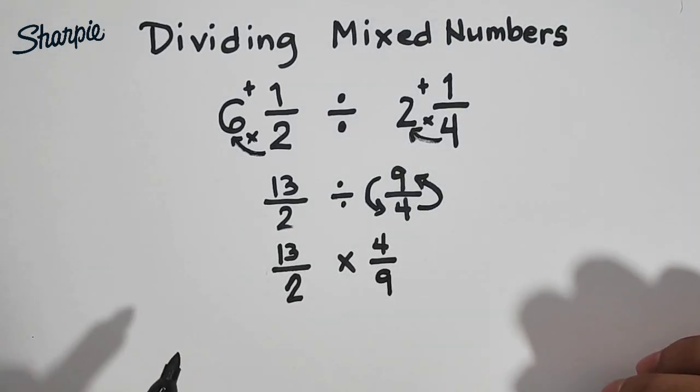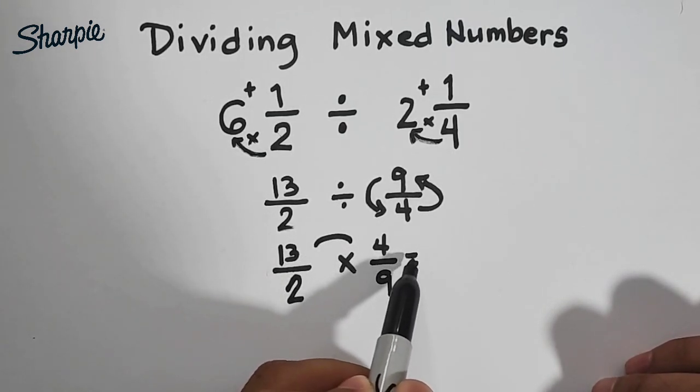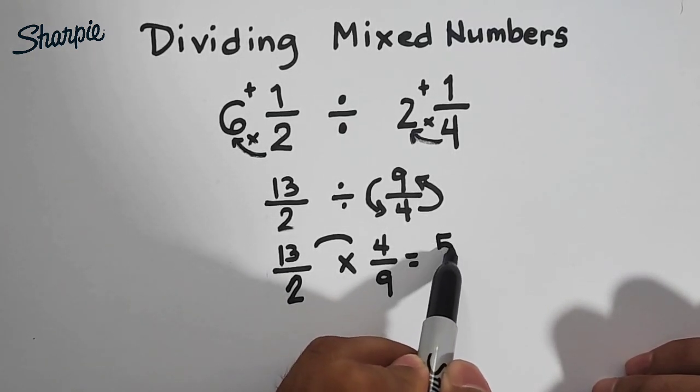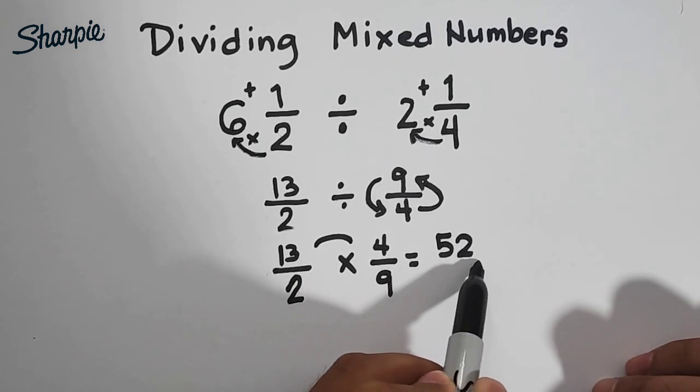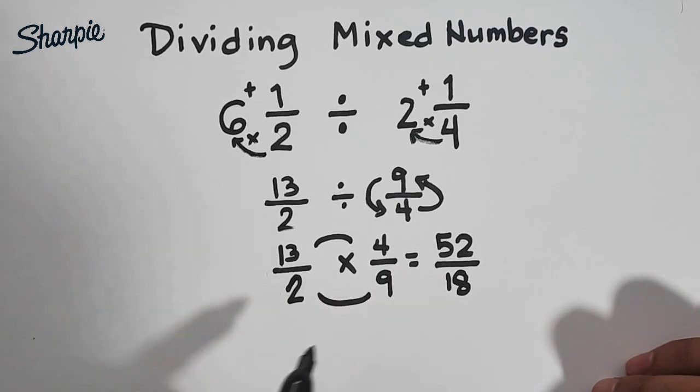So what's next is, we will multiply it. So we have now 13 times 4, that is 52 over 2 times 9, that is equal to 18.